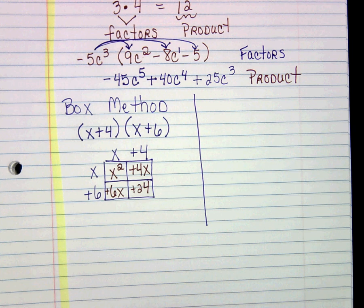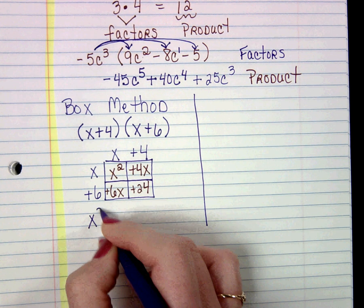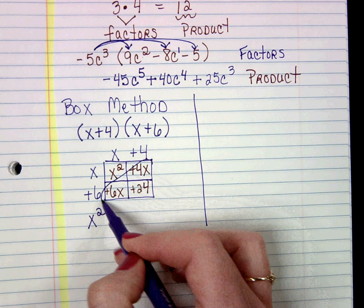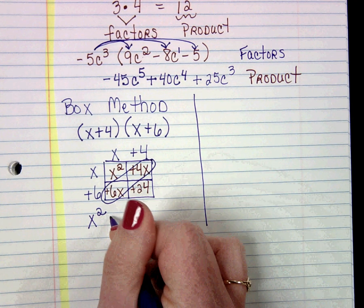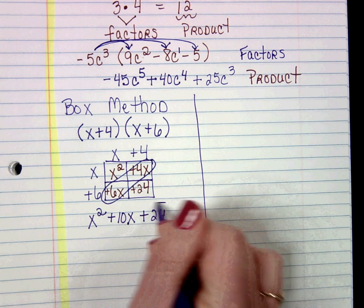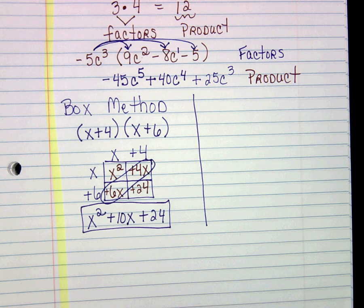The box is just to help us do the multiplying. We're not done. That's not how we want to write our answer. What we need to do now is look for our like terms. Here we have x squared. There's nothing that goes with it. The great thing about the box method is your like terms should always be diagonal from one another. I'm going to add my like terms together. 4x plus 6x would be 10x. Then I have the plus 24, which is a constant term. Here is my product, my trinomial, x squared plus 10x plus 24.